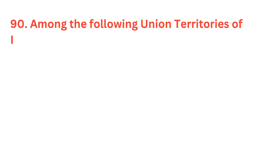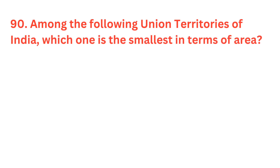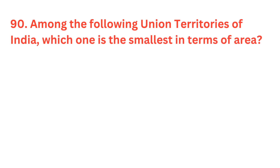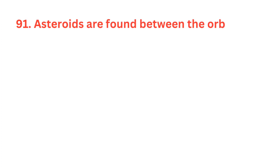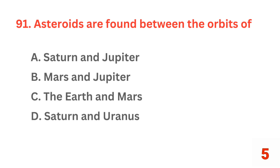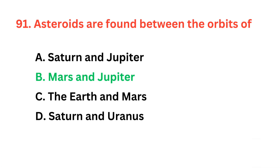Among the following union territories of India, which one is the smallest in terms of area? The correct answer is option B, Lakshadweep. Asteroids are found between the orbits of? The correct answer is option B, Mars and Jupiter.